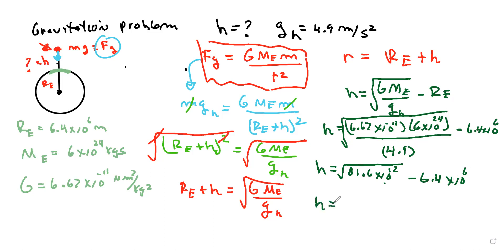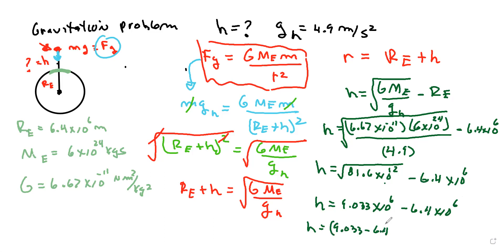Working through the calculation, the square root gives 9.033 times 10 to the 6, and subtracting 6.4 times 10 to the 6 gives h equal to 2.63 times 10 to the 6 meters. This is the answer, and it matches the answer from the book by Resnick and Halliday.